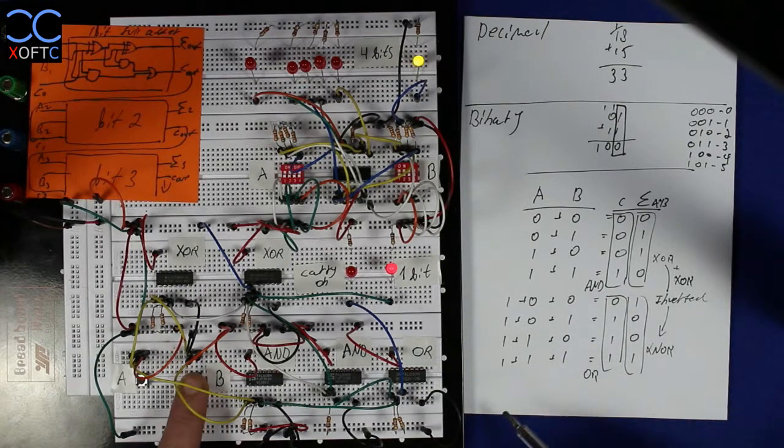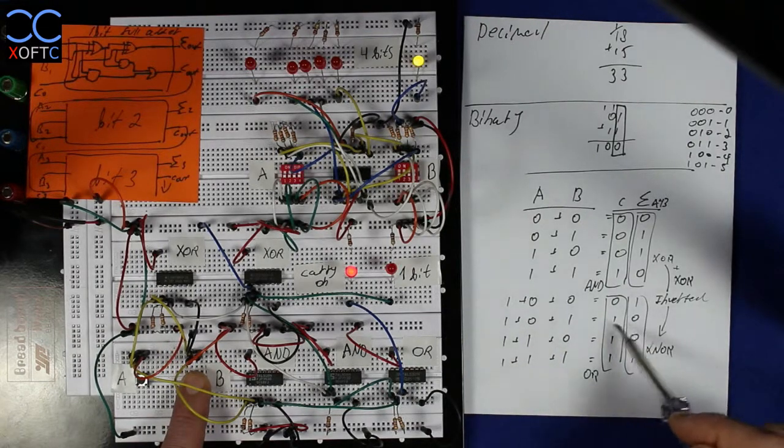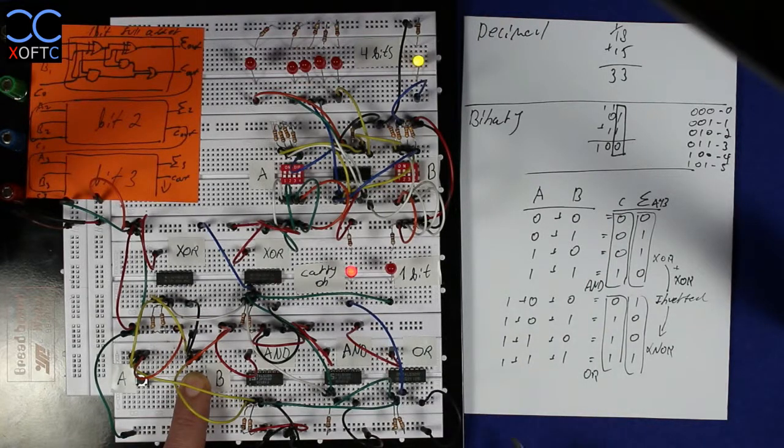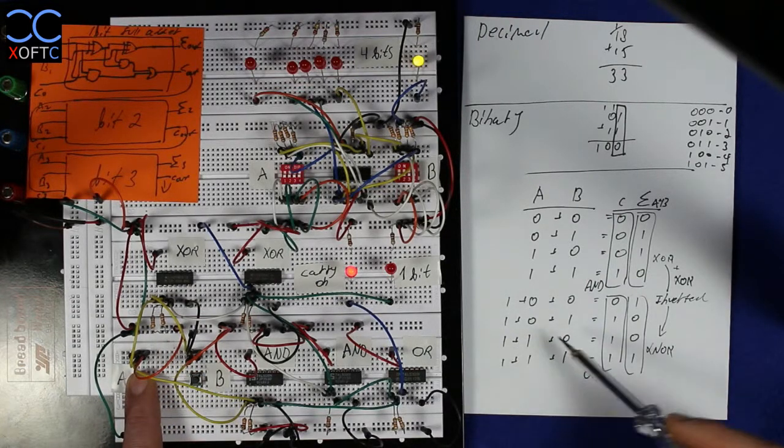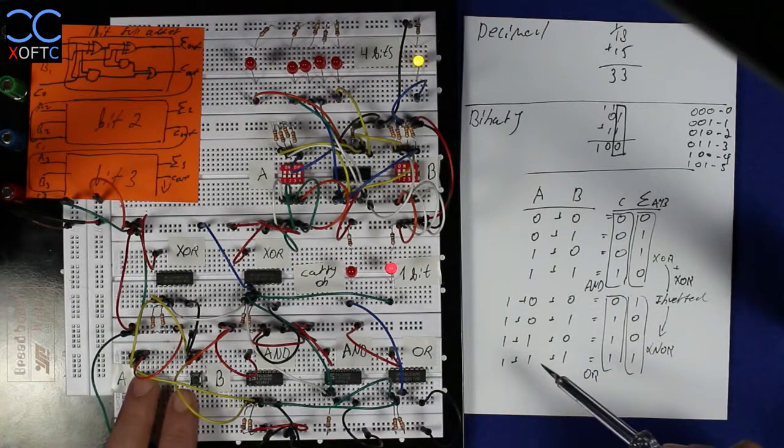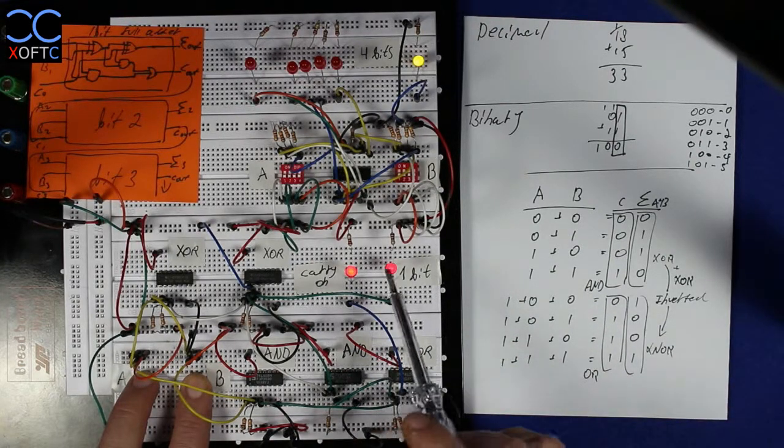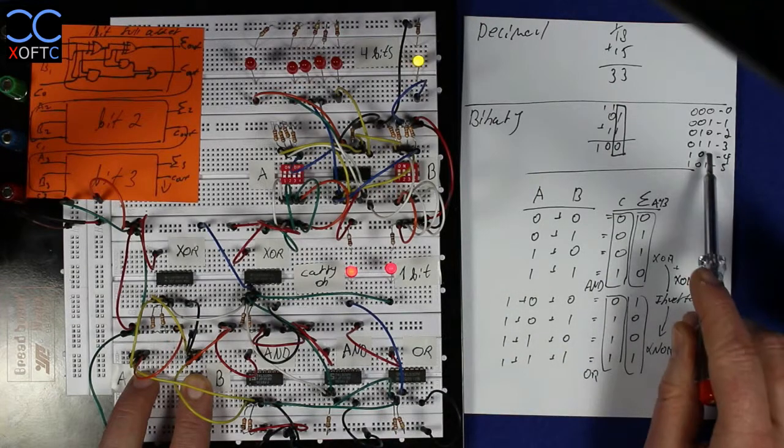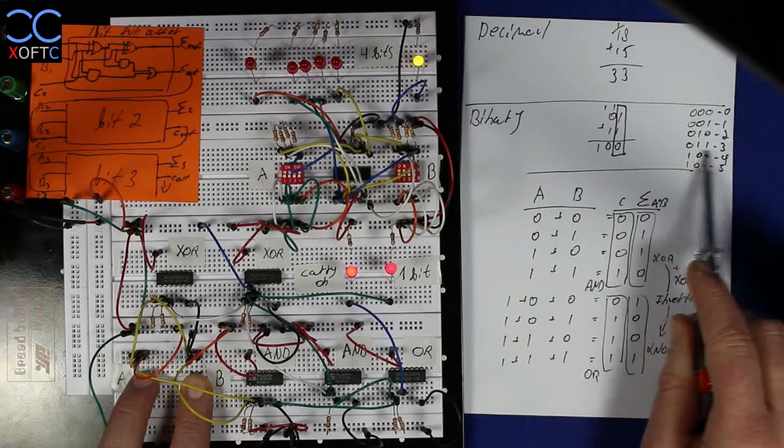1 plus 0 plus 1 is 2. We get a 2, 0 on the sum and 1 on the carry-on. And again, 1 plus 1 plus 0 is 2. And 1 plus 1 plus 1 is 3. We get 1 on the sum and 1 on the carry-on. And we get the value of 3.